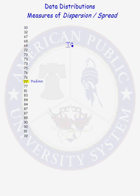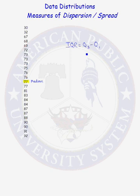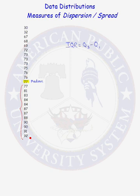Remember, the interquartile range is equal to the third quartile minus the first quartile. The first step in finding Q3 and Q1 is to locate the median of the data set — we have done that. Now let's find the third quartile. Q3 is the median of the numbers above the median. There are 12 observations above the median, which is an even number, so the median will be the average of the two middle numbers. The two middle numbers are both 87, so Q3 equals 87.